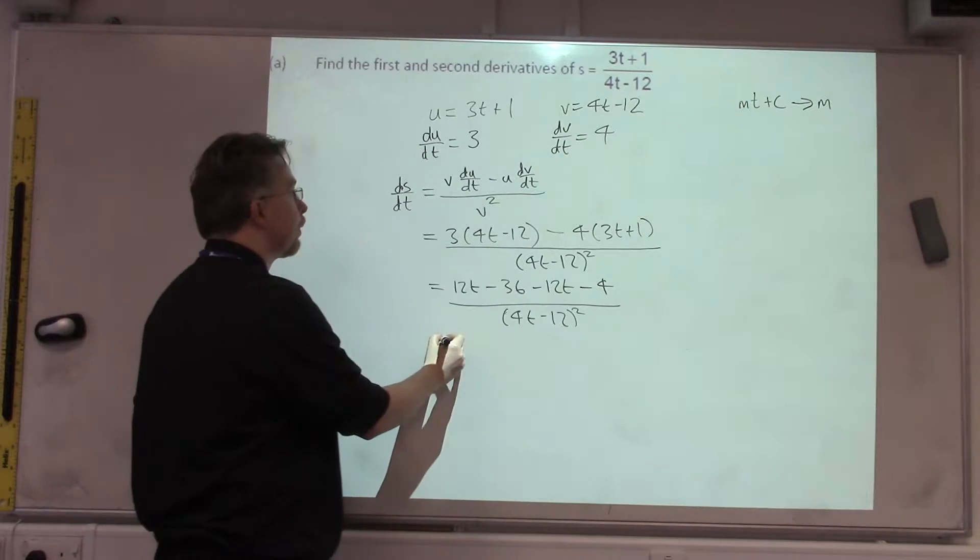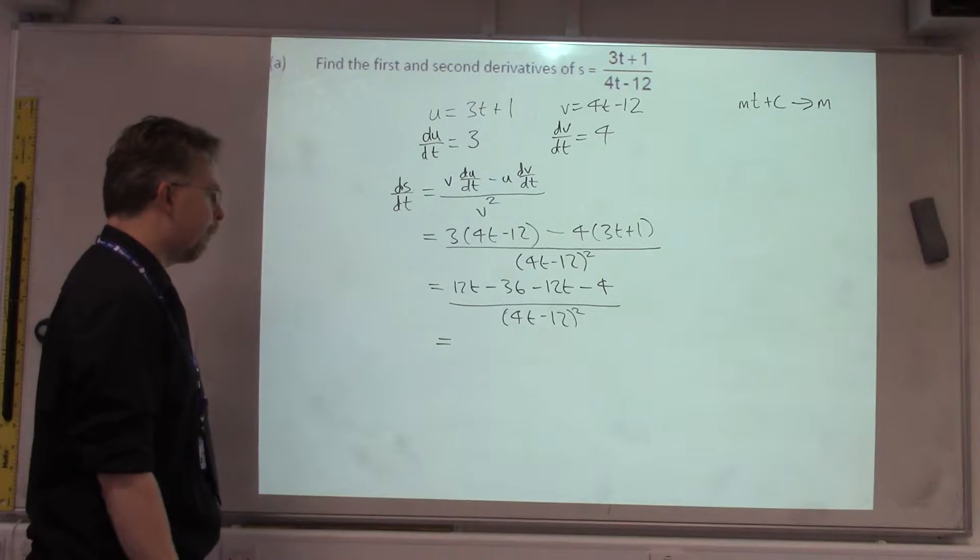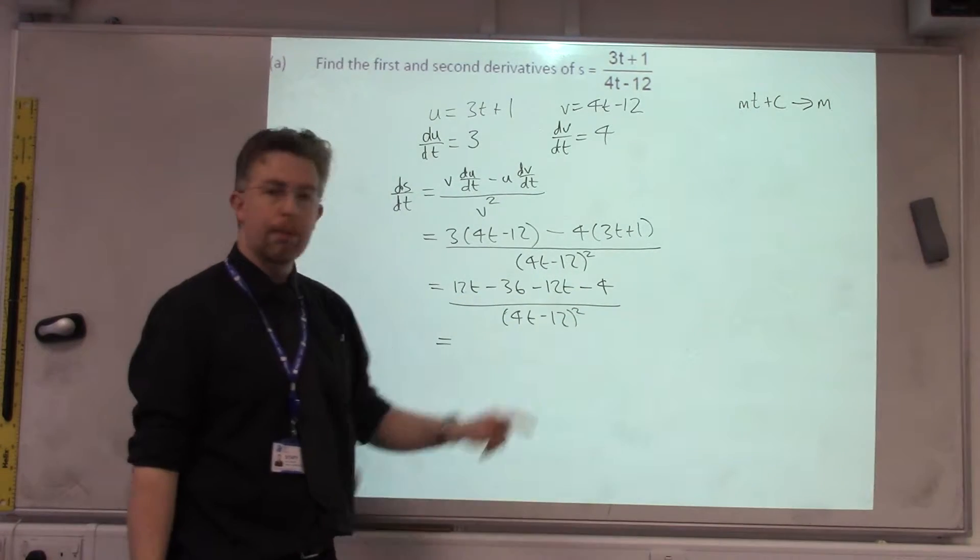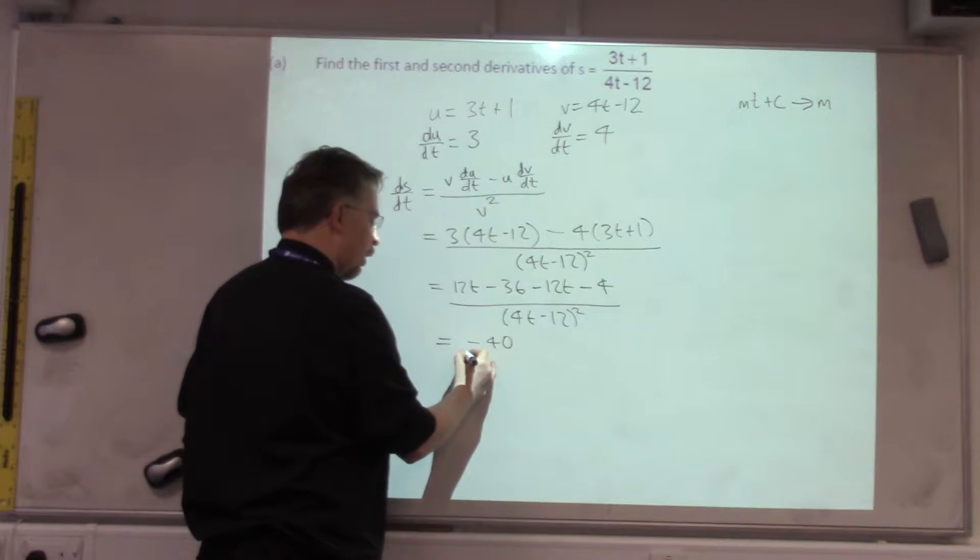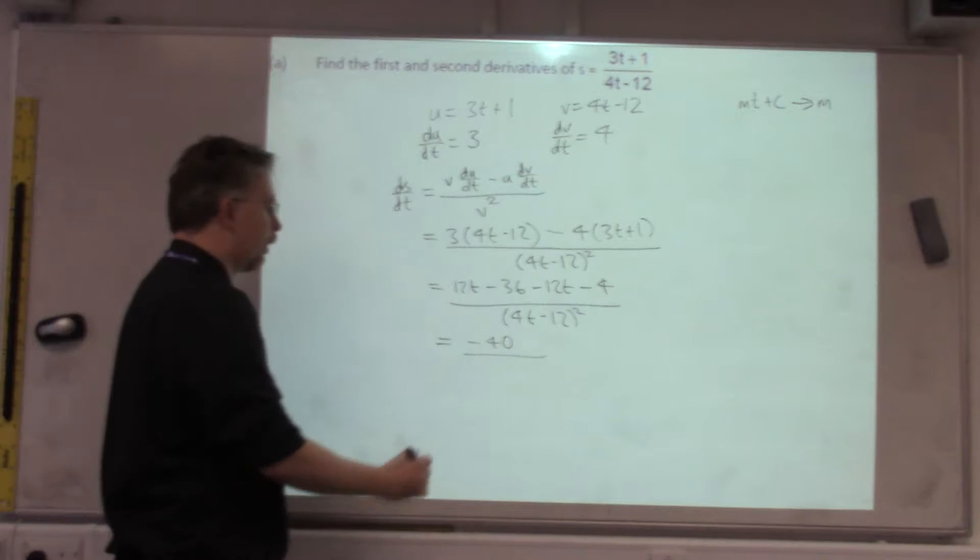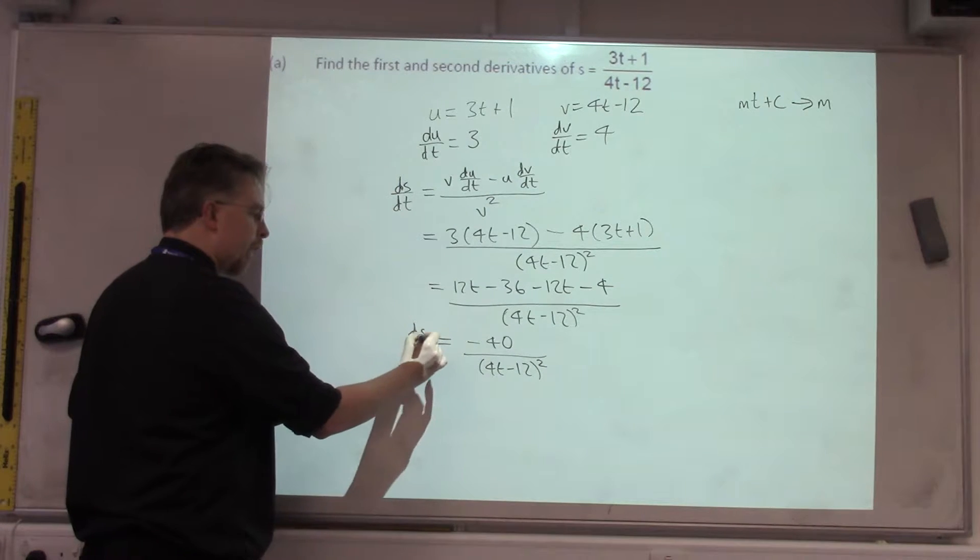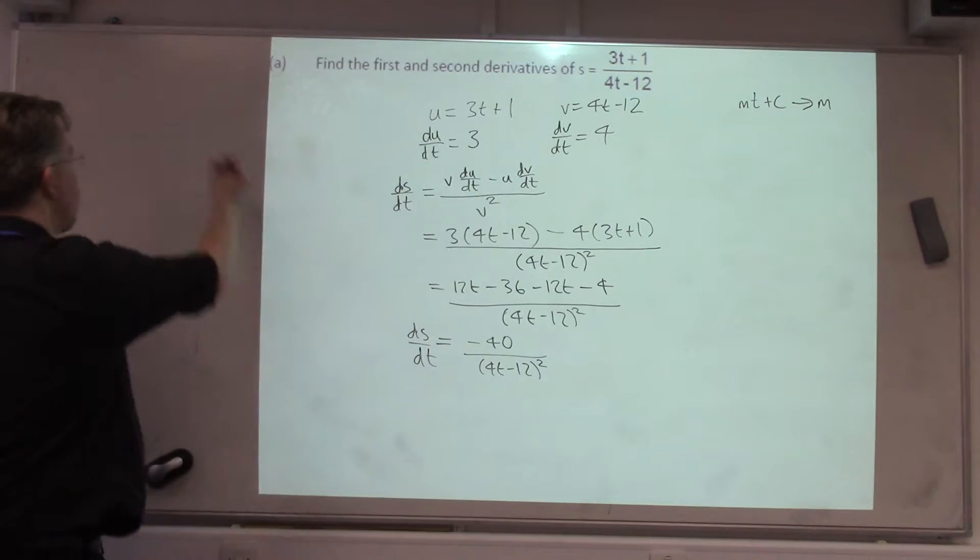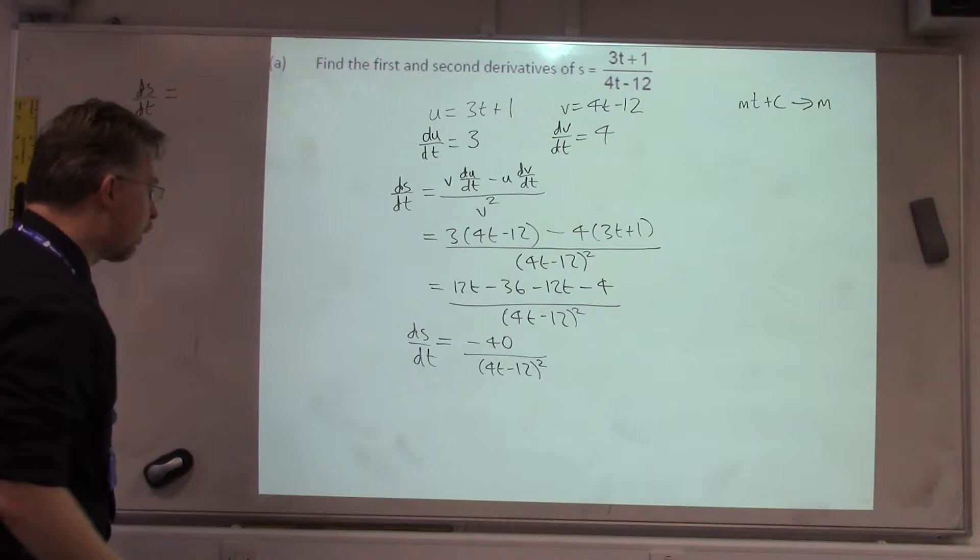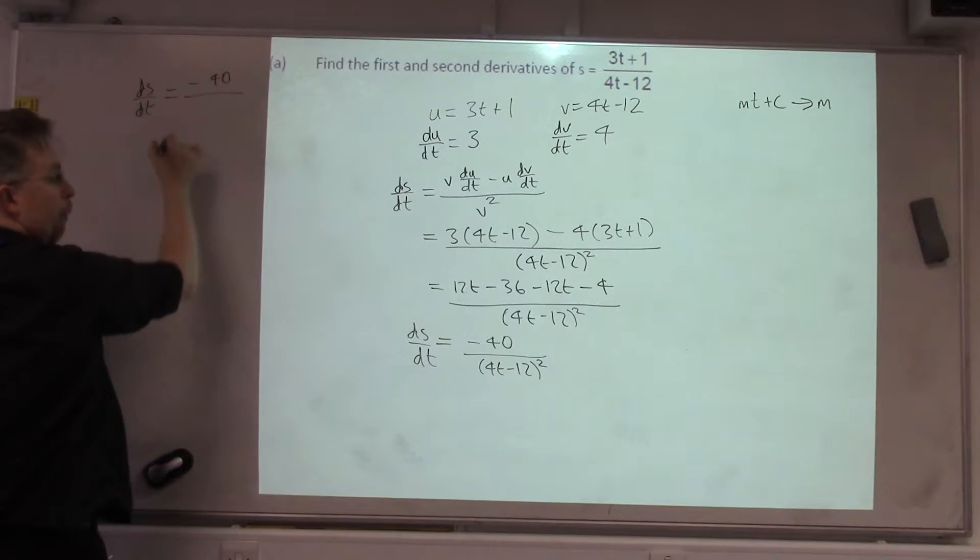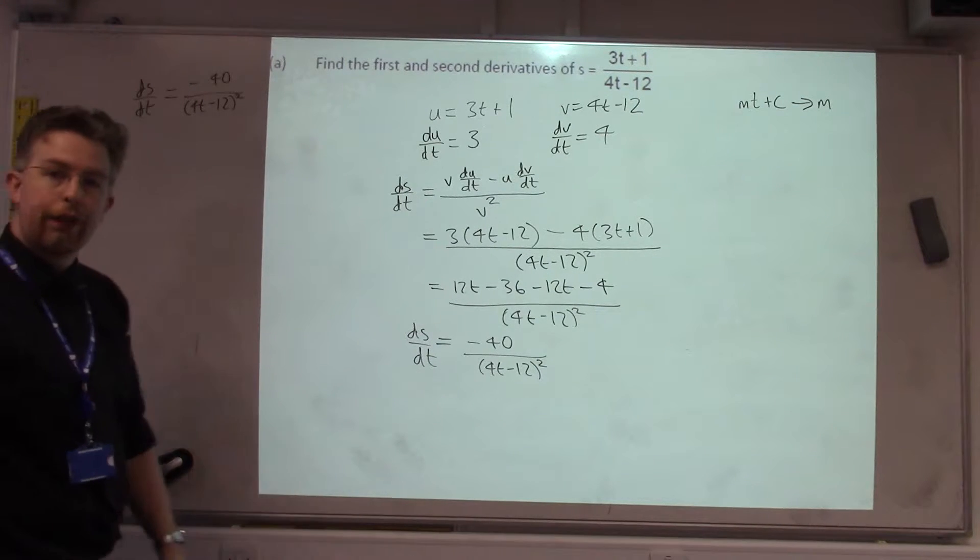All over 4T minus 12, all squared. Simplifying. 12T take away 12T is 0. We've got minus 36 minus 4, which is minus 40. Divide by 4T minus 12, all squared. And that's what the S by the T is, which we'll need for part B. So, I'm going to make a quick note of it here. There are no turning points for this curve, so we don't need to do a part C for turning points. So, that's all we're going to need for future sections.